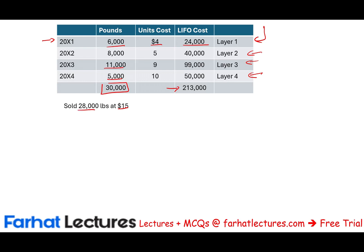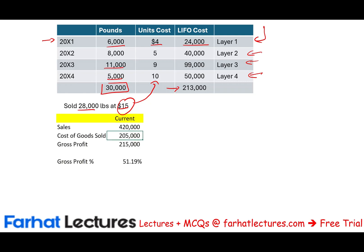If we sold 28,000 pounds at $15, we must sell at $15 because the most recent purchase price is $10 and we need to make a profit. Looking at the income statement: sales are 28,000 × $15 = $420,000. Using LIFO, we liquidate all recent layers first. We have 30,000 pounds total and need to sell 28,000, so 2,000 pounds remain at $4. The cost of goods sold is computed by working backward through the layers.